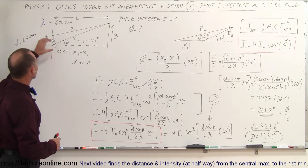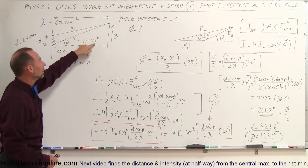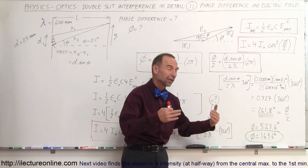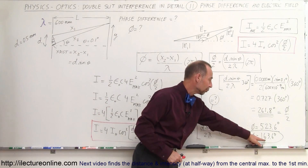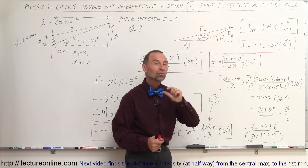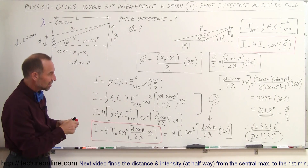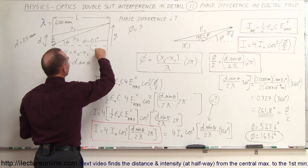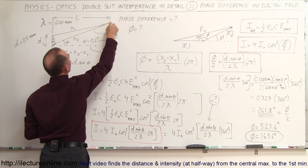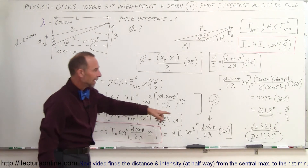In this situation — slit distance 0.5 mm, wavelength 600 nm, angle 0.1 degrees — the phase difference is 163.6 degrees, which is close to 180°. That means there's mostly destructive interference, and you wouldn't see much light at that location. Visualizing the pattern, there's a central maximum, then another maximum, and this point is near a minimum — we've gone past a full wavelength and are almost back to a minimum.